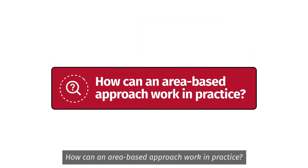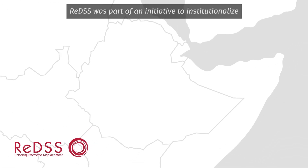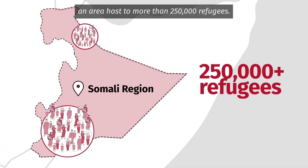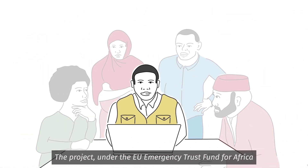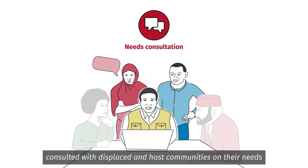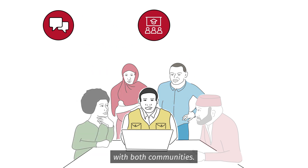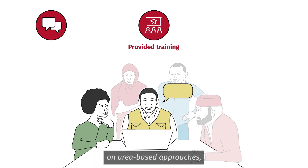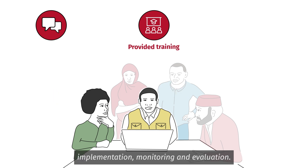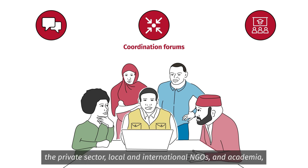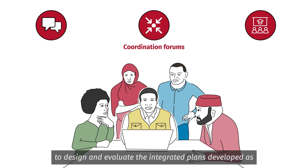How can an area-based approach work in practice? In 2020, REDS was part of an initiative to institutionalize area-based approaches in the Somali region of Ethiopia, an area host to more than 250,000 refugees. The project, under the EU Emergency Trust Fund for Africa, consulted with displaced and host communities on their needs and developed strategies to improve interactions with both communities, trained local and regional authorities on area-based approaches, incorporating insights from community consultations on program design, implementation, monitoring, and evaluation. Co-hosted coordination forums with the government brought together different actors such as the UN, civil society, the private sector, local and international NGOs, and academia to design and evaluate the integrated plans developed as a result of the training.